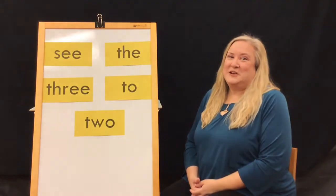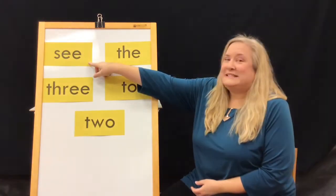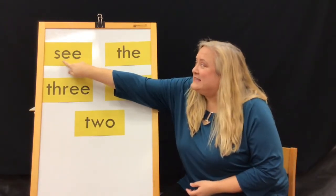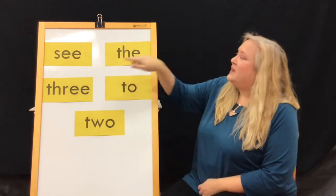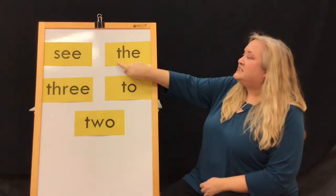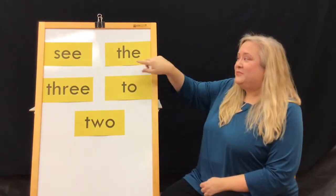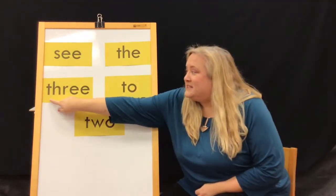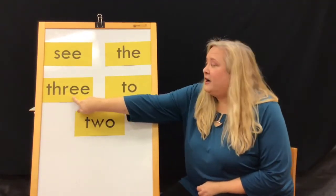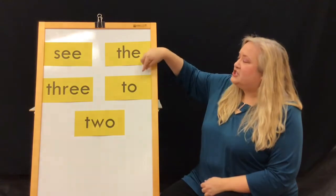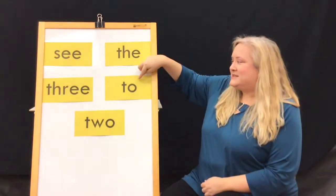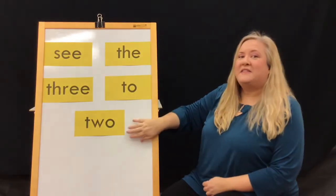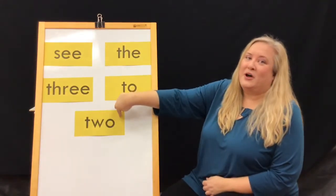Let's read our sight words this week. See, which is spelled S-E-E. The, spelled T-H-E. Three, spelled T-H-R-E-E. Two, spelled T-O. And the number two, spelled T-W-O.